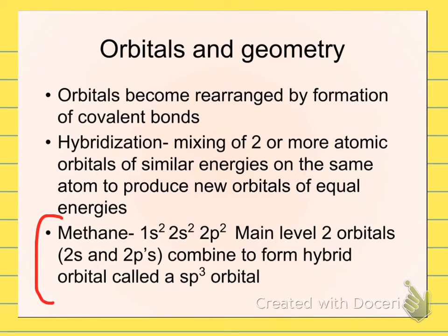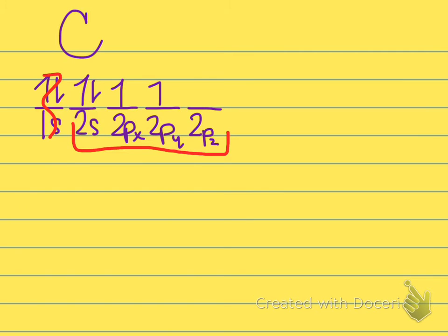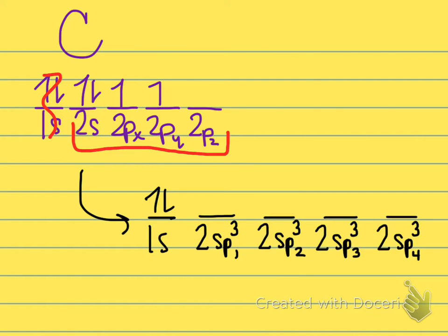And methane is kind of the classic example. The two main level orbitals, the s's and the p's, combine to form hybrid orbitals that we call sp3s. When this hybridization occurs, instead of this picture that we've drawn so many times, with the full 2s and the two electrons on a 2p subshell, and one entirely empty 2p orbital, we get something that looks like this.